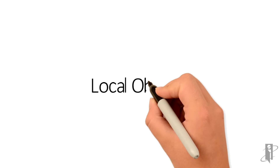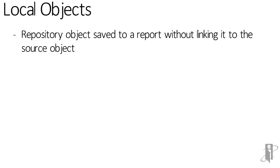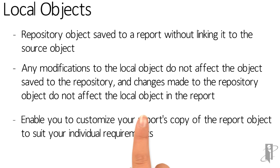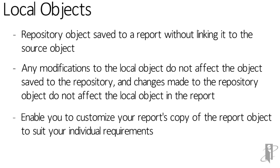When you save a repository object to a report without linking it to the source object, the object becomes a local object. In other words, the report object is not linked to the saved object in the repository. Any modifications to the local object do not affect the object saved to the repository, and changes made to the repository object do not affect the local object within the report. Local objects enable you to customize your report's copy of the report object to suit your individual requirements.